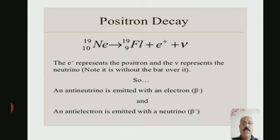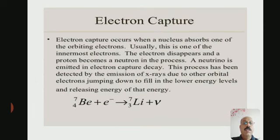Electron capture occurs when a nucleus absorbs one of the orbiting electrons, usually one of the innermost electrons. The electron disappears and a proton becomes a neutron in the process. A neutrino is emitted in electron capture decay.